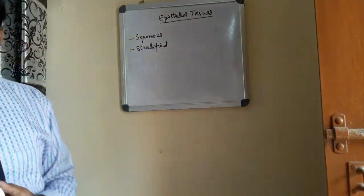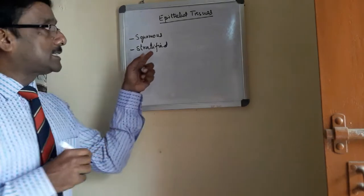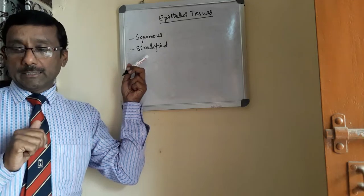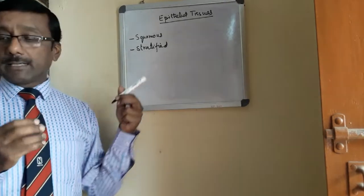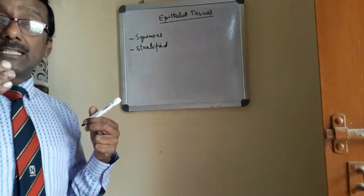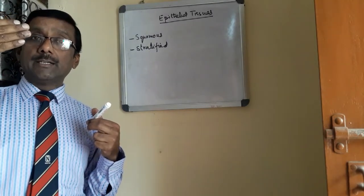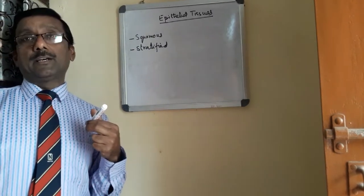It is present in the skin and in the cornea, which is the topmost layer of your eyes. The function is protection and acts as a protective barrier, protecting from external injuries and external harm.